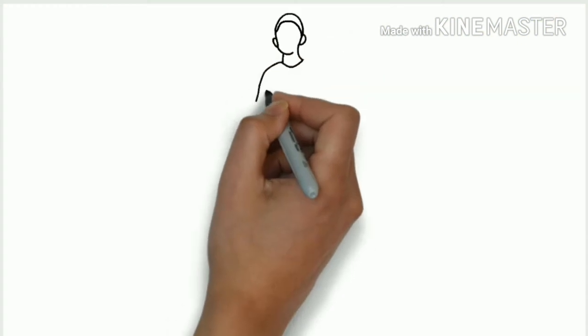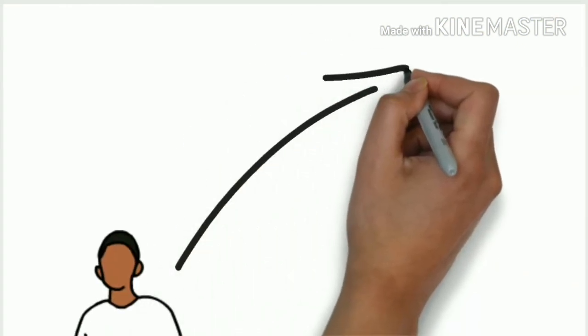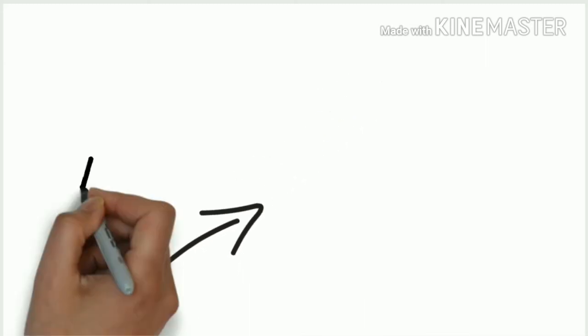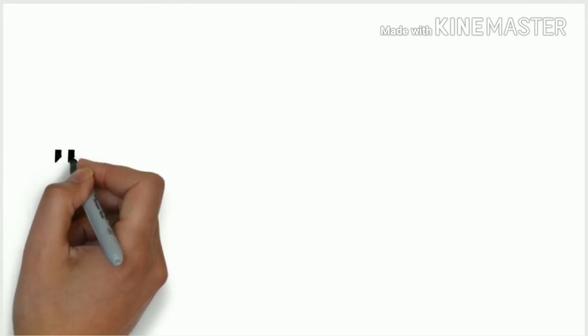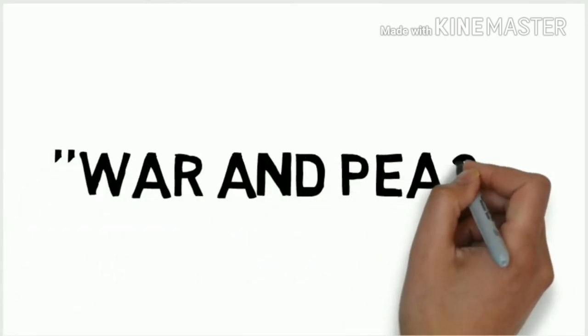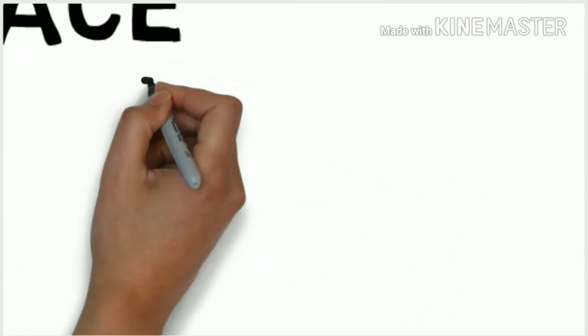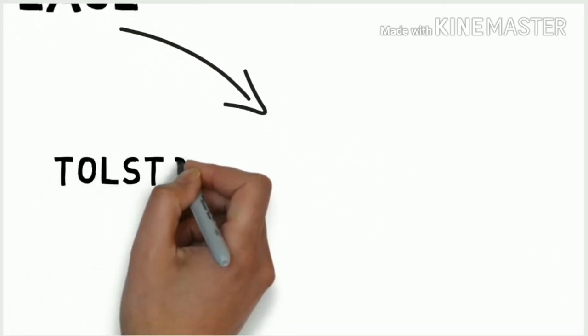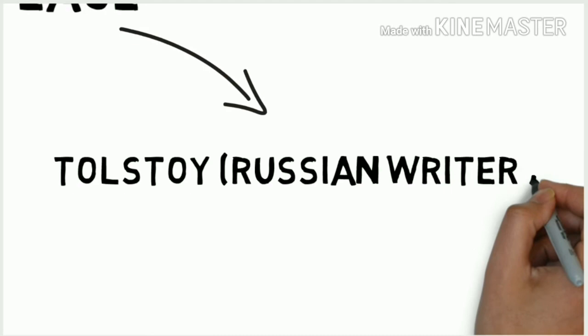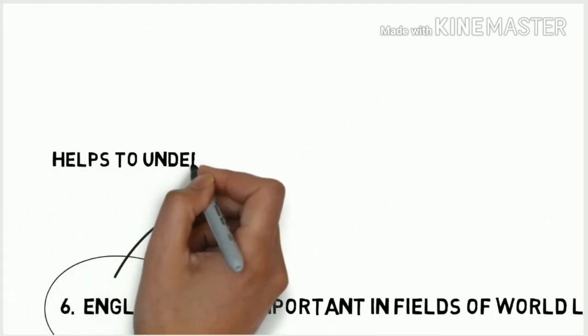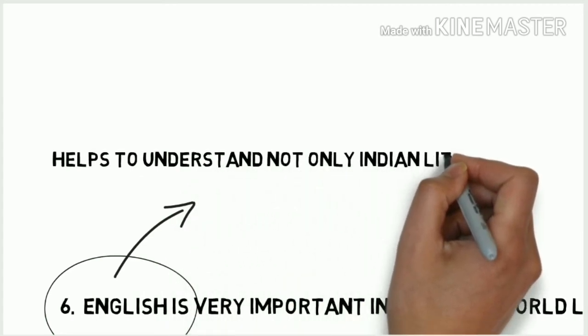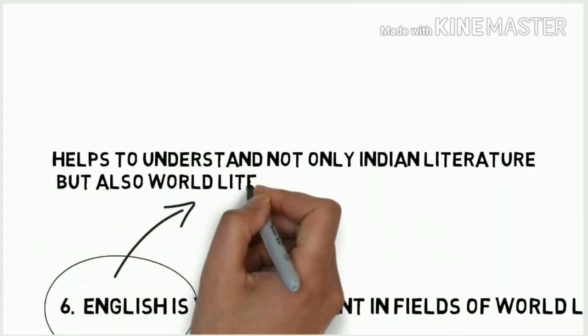You can read the short stories of Maupassant without knowing French. A student from Japan or a student from China can easily read the writings of Kalidasa or Rabindranath Tagore through English translation. You can read the world famous novel War and Peace written by the great Russian writer through English translation. English will help you to read not only the English literature but also the world literature.